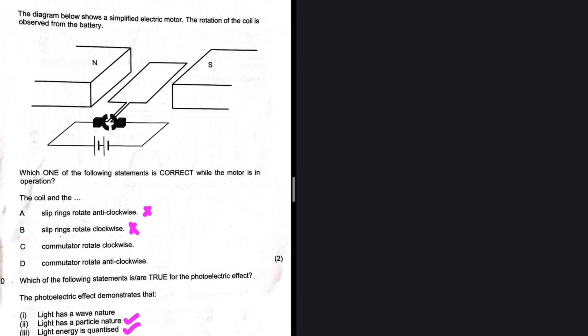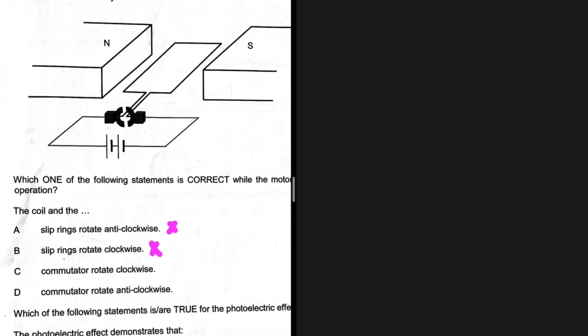We are only looking at C and D: commutator rotates clockwise (C) or anti-clockwise (D). The rotation is observed from the battery. We have the positive end and negative end of the battery, and the current flows accordingly.